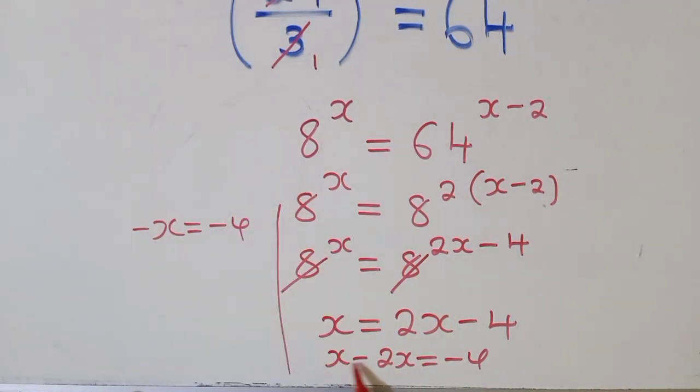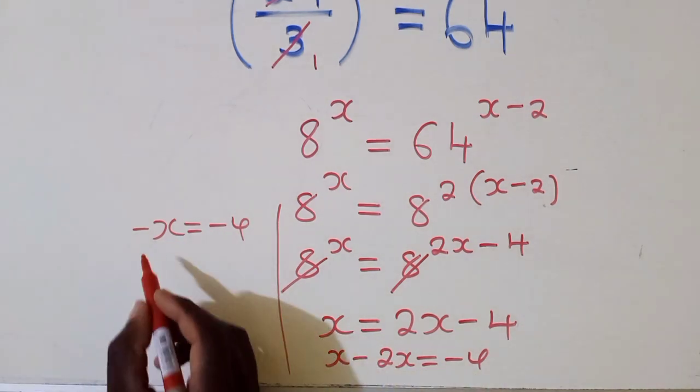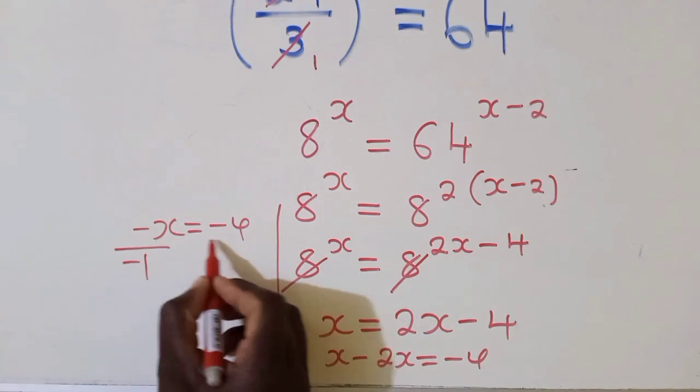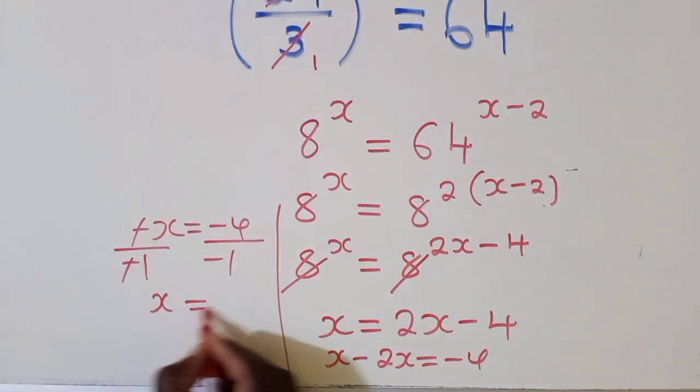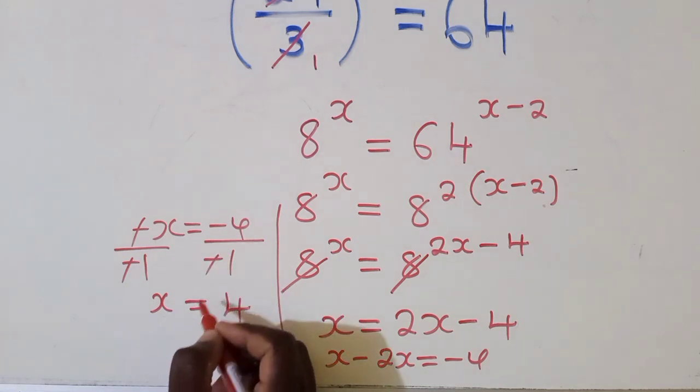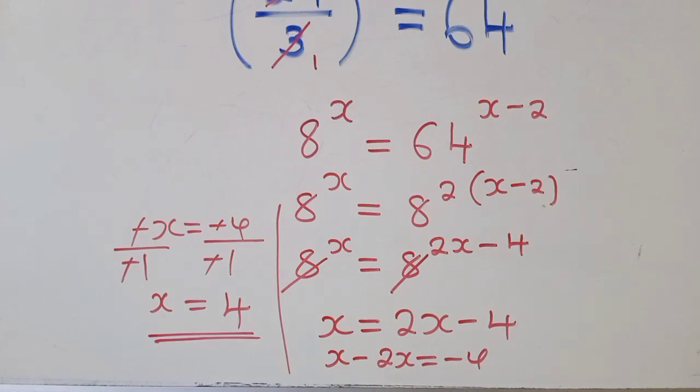Because x minus 2x is negative x, which is equal to negative 4. So divide by negative 1 by negative 1, this negative will go, will remain with a 4. Because negative 1 into negative 4, it's just 4. Our solution in this case is equal to 4.